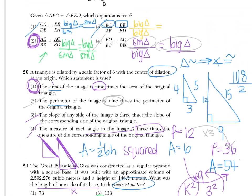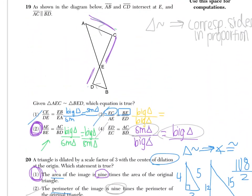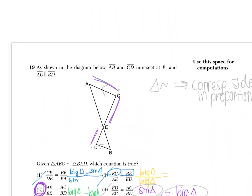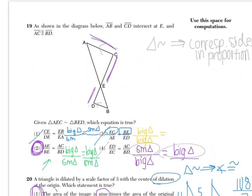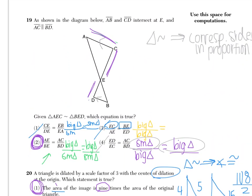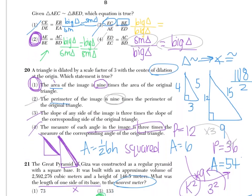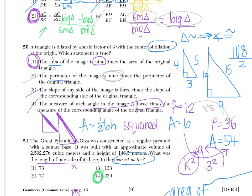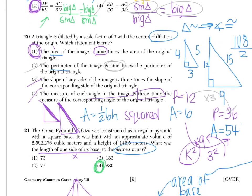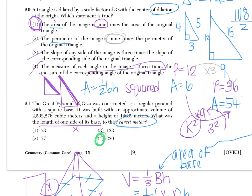So the answers for this page are: number 19 is choice 2, number 20 is choice 1, and number 21 is choice 4.